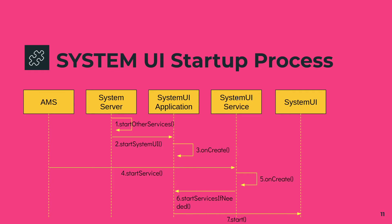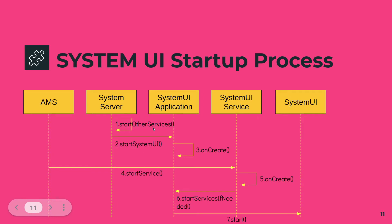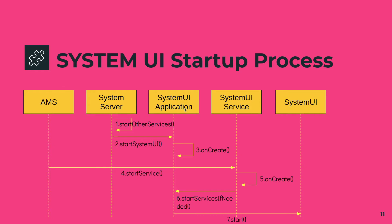The first step is that the System Server receives a signal from Zygote. Once the System Server gets that signal, it calls the function startOtherServices, which in turn calls startSystemUI. This startSystemUI function creates an instance of SystemUIApplication and its onCreate is triggered. SystemUIApplication extends the Application class and has an onCreate function which gets triggered when it is instantiated.